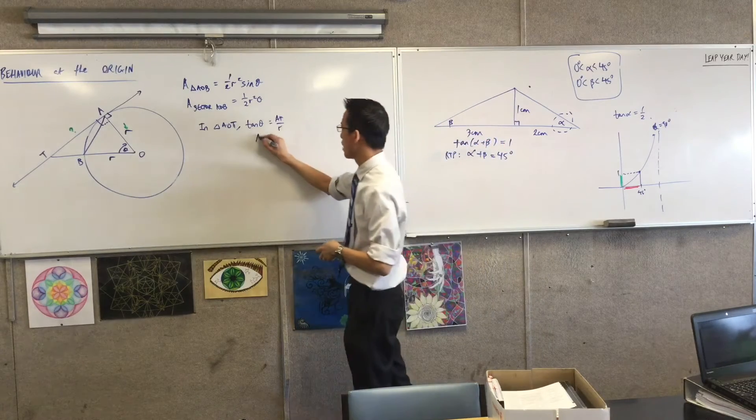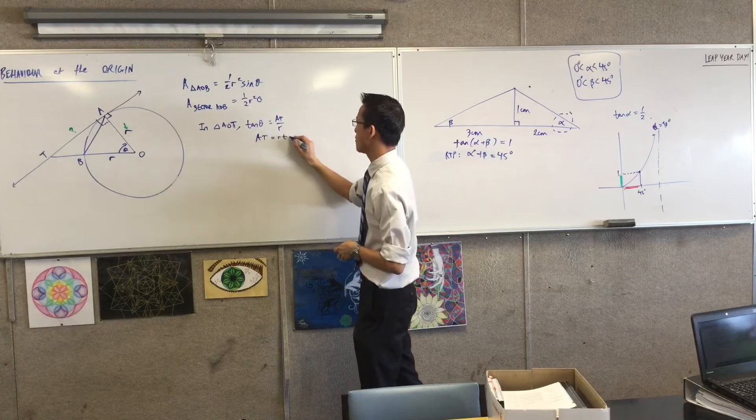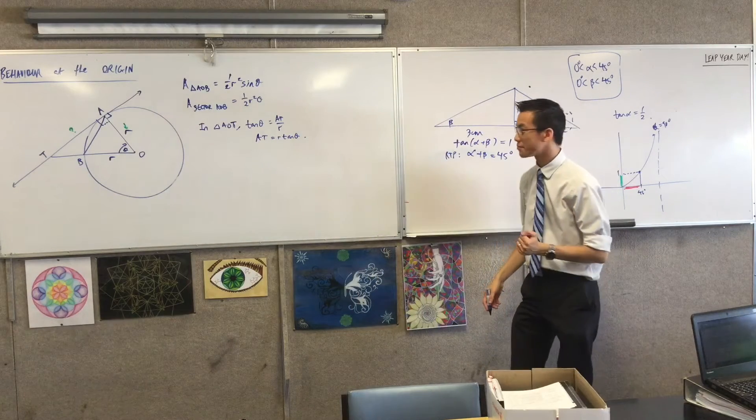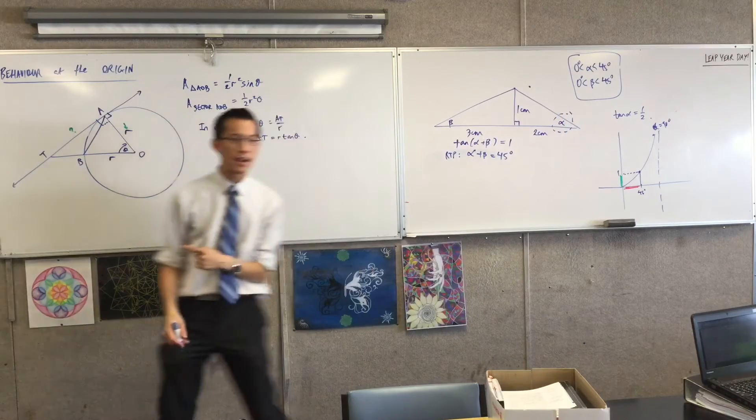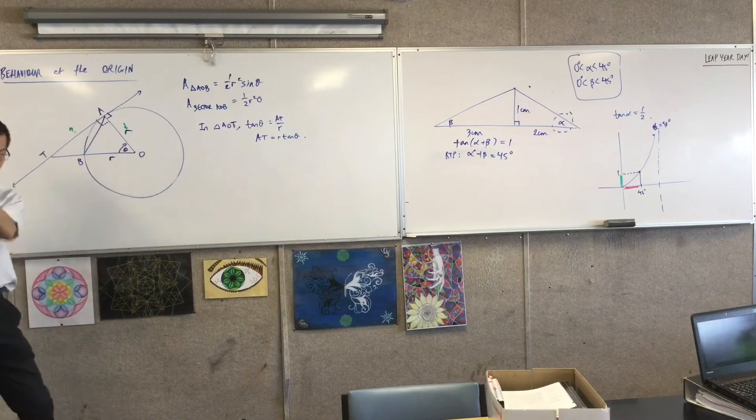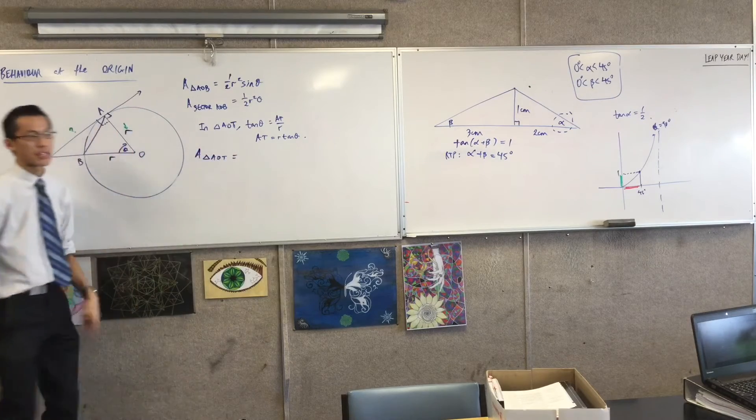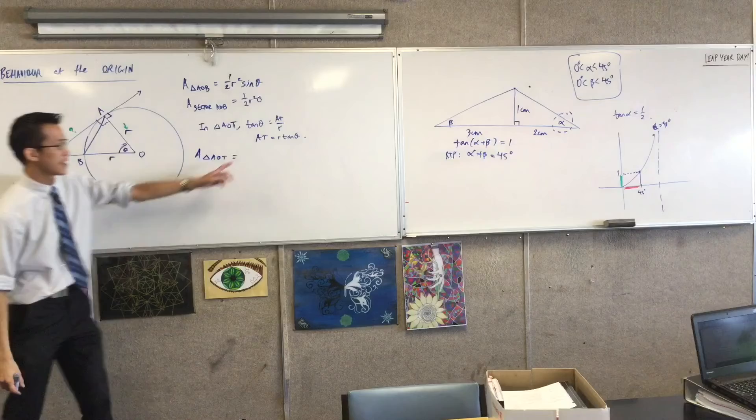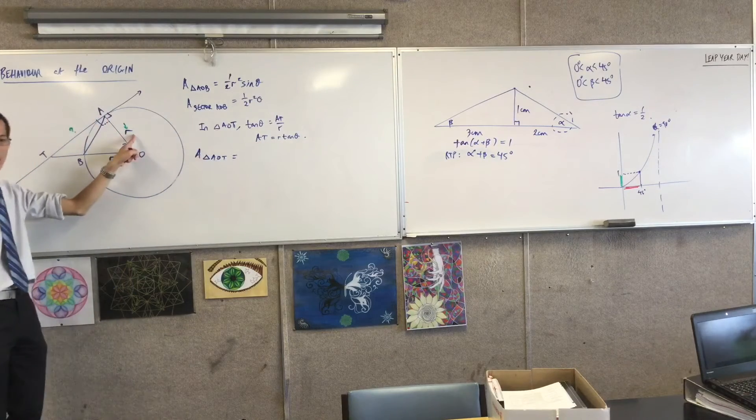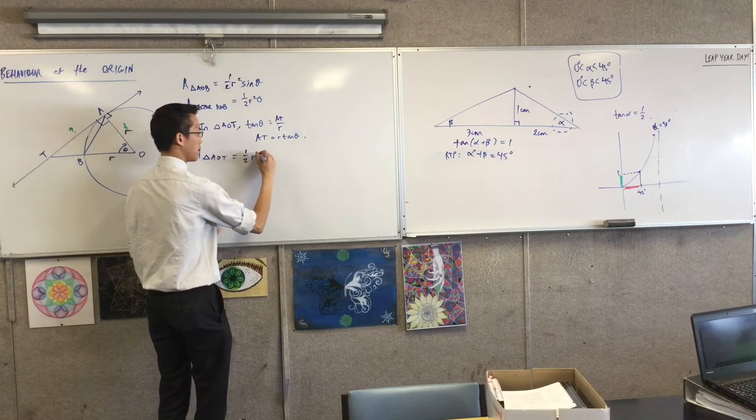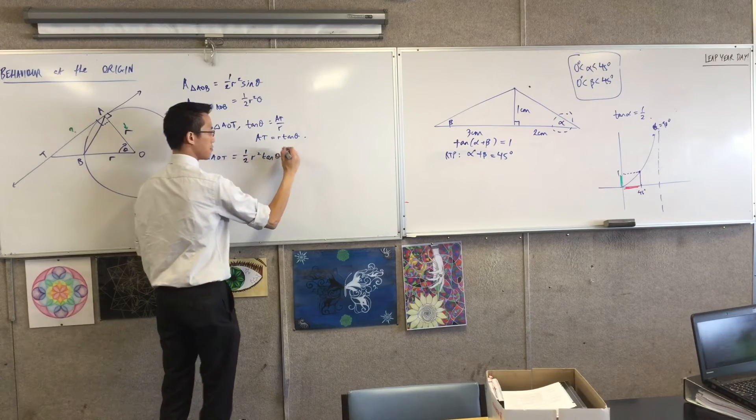So that's really good, because now that just hands me the base in a very nice, very convenient form. That's all I needed to find. Area of triangle AOT is half base times height - that's the base, and that's the height. So you can see the R's are going to pull out.